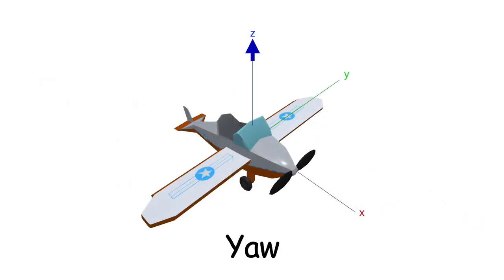These rotations are sometimes called yaw, pitch, and roll. And you can combine them to orient your airplane in any direction.